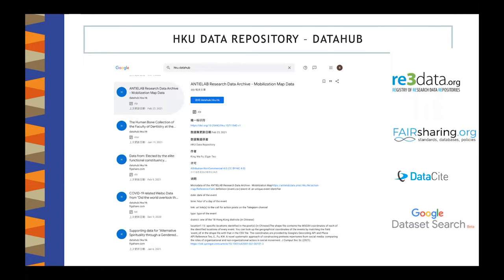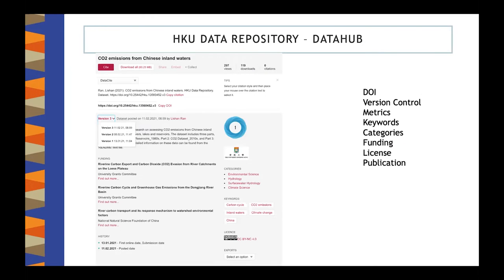The Data Hub is registered in re3data.org and file sharing. All datasets in the Data Hub follow the schema.org metadata standard and can be searched in Google Dataset Search. For published datasets in our Data Hub — here is an example — we have the DOI, version control, different metrics, keyword categories, and funding information for researchers receiving funding from RGC University Grants Committees.